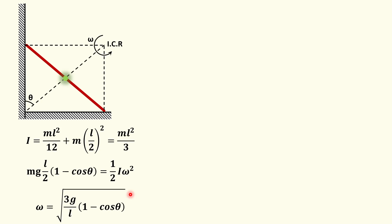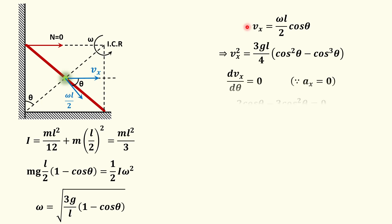Now we move towards the main part or crux of this question: we have to determine Vx, the x-component of the center of mass velocity. Taking x towards the right, the center of mass is moving in a circular fashion about the ICR with radius L/2. So the velocity of the center of mass is perpendicular to the line from ICR to CM, with magnitude ω·(L/2). Taking the x-component of that velocity, we get Vx = ω·(L/2)·cosθ.